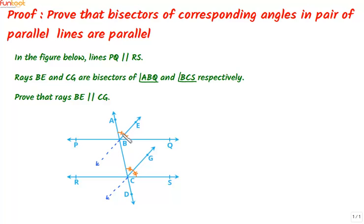So what we are saying is that angle ABE equals angle BCG. If we take BE and CG as the pair of lines and AD as the transversal, then these two angles are corresponding angles, and since they are equal, by the converse of the corresponding angle axiom, we can say that BE is parallel to CG.